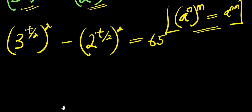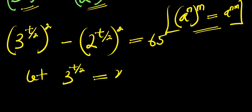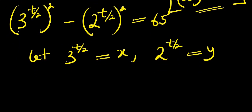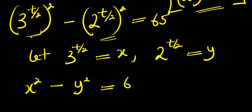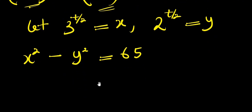Now let x equal 3 to the power of t over 2, and let y equal 2 to the power of t over 2. Substituting, we have x squared minus y squared equals 65.